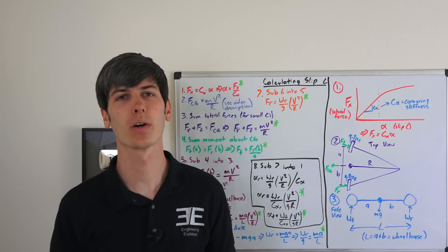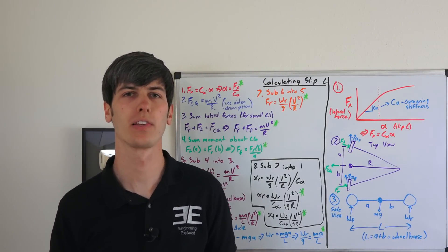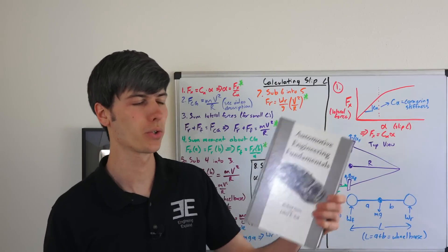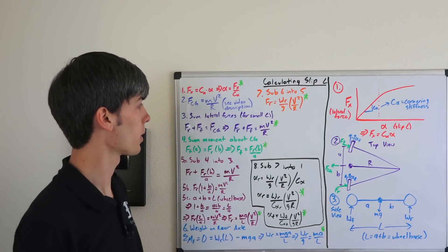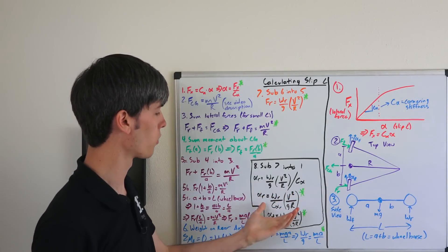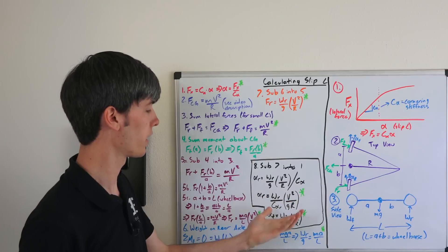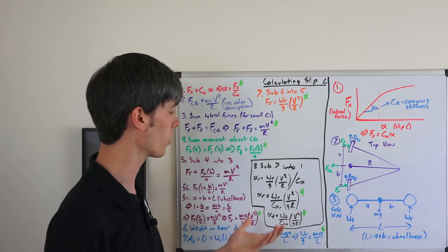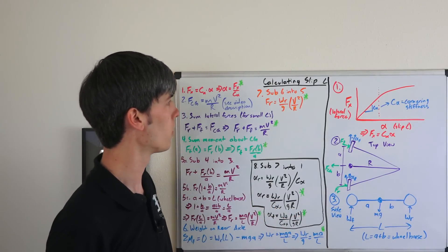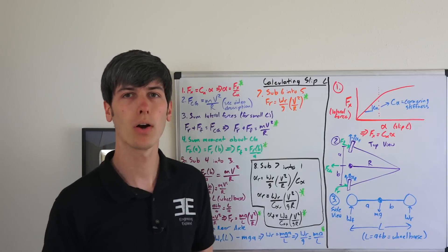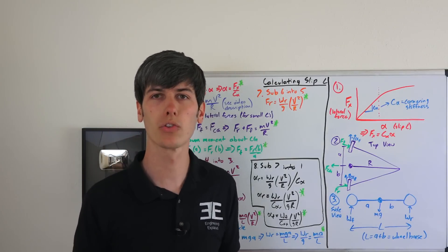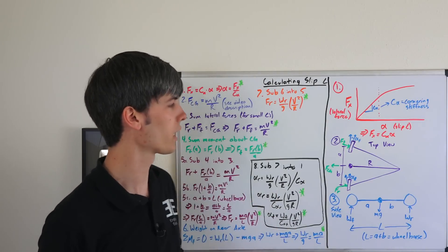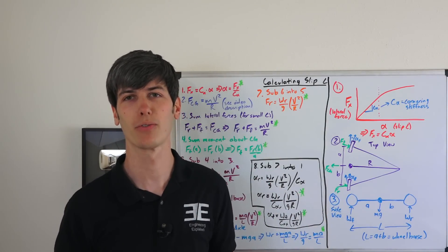Hello everyone and welcome. In this video we're going to be deriving the equation for slip angle, using the book Automotive Engineering Fundamentals by Richard Stone and Jeffrey Ball, hopefully simplifying it a little bit. These two equations for slip angle for the front and rear of the vehicle are very important in understanding vehicle dynamics. Now if you are terrified of math, when it comes to mechanical engineering this is pretty basic stuff, so don't be too afraid of watching.